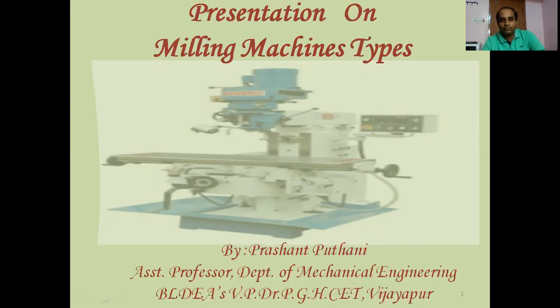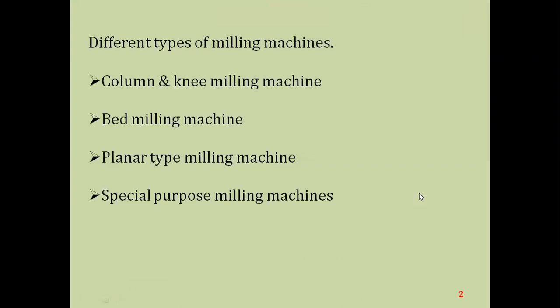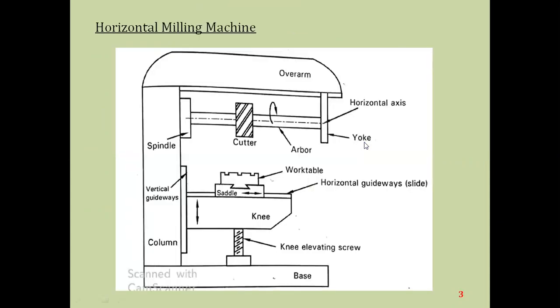The different types of milling machines are: the first one is the column and knee milling machine, the second one is the bed milling machine, the third one is the planar type milling machine, and the fourth one is special purpose milling machines. In almost all cases we prefer the column and knee type milling machine for maximum operations, and sometimes we use the other three machines as well.